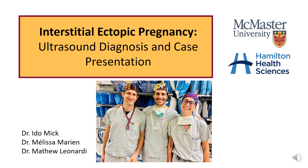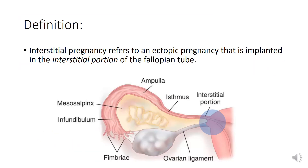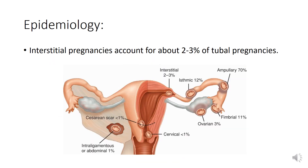In this video, we will discuss ultrasound diagnostics of interstitial pregnancy based on a clinical case presentation. Interstitial pregnancy refers to an ectopic pregnancy that is implanted in the interstitial portion of the fallopian tube. Interstitial pregnancies account for only 2-3% of ectopic pregnancies, making them a relatively rare diagnosis. Failure to diagnose in time could lead to rupture and catastrophic hemorrhage.